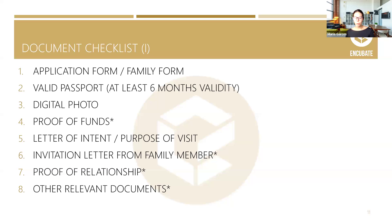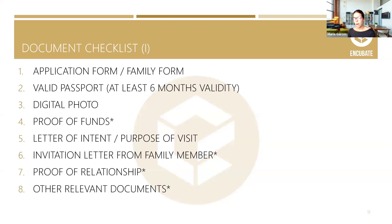The invitation letter from your Canadian family member probably carries the most weight in this type of application. In this letter, your Canadian citizen or permanent resident family member in Canada provides their details — confirmation of their passport number or driver's license number, full name, their relationship to you — confirming they are inviting you to come to Canada. If applicable, they should also provide details of accommodation. We're going to see what details to include in the next slide.